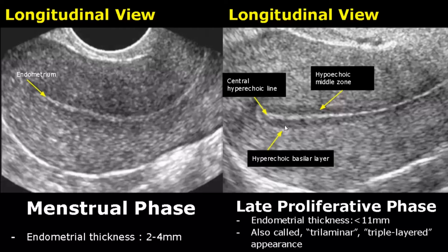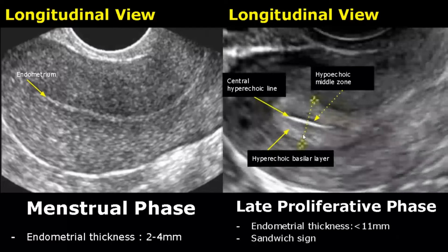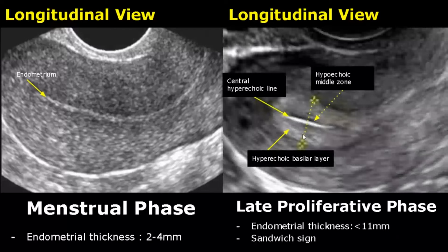In the late proliferative phase, the thickness can be up to 11 mm and we have three distinct layers: the innermost central hyperechoic line, followed by a hypoechoic middle zone, and the outermost hyperechoic basilar layer. This appearance is known as trilaminar or triple-layered, and is also called the sandwich sign.